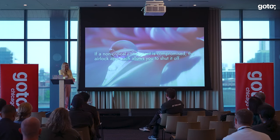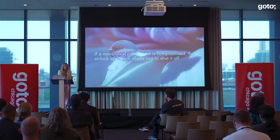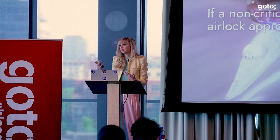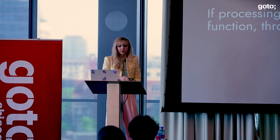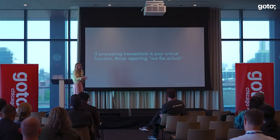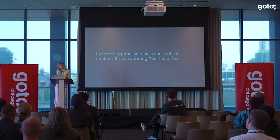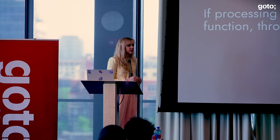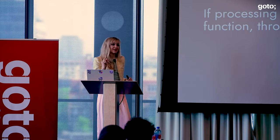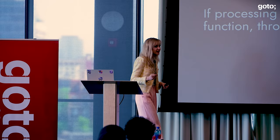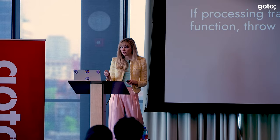Make sure to build the software so you can indeed neglect whatever those non-critical functions are as necessary. This applies equally to performance incidents and security incidents — if one component is compromised, the airlock approach means you can shut it off if it's non-critical and contain that contagion. For example, if processing transactions is your system's critical functionality and reporting isn't, you should build the system so you can throw reporting out of the airlock and preserve resources for processing transactions. Even if reporting is your most lucrative function, if timeliness of reporting matters much less than processing transactions, that's still the thing you want to sacrifice.